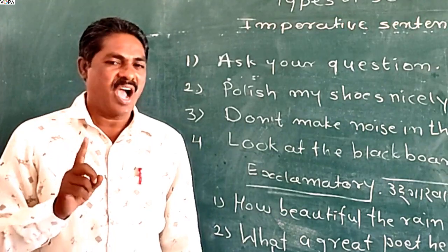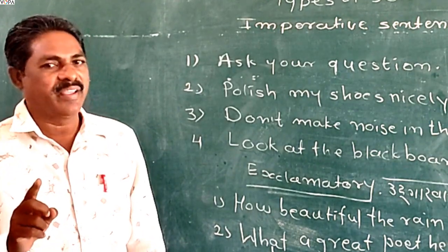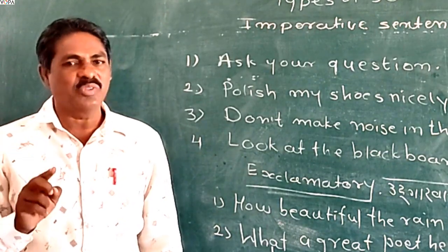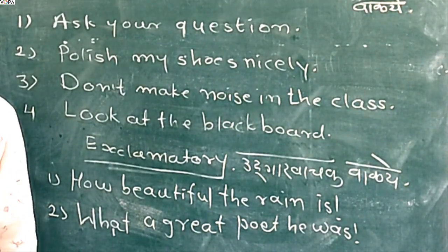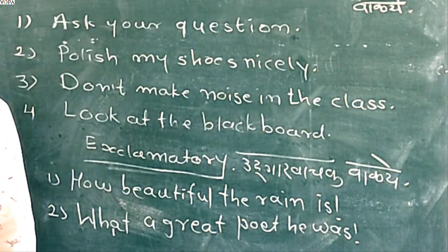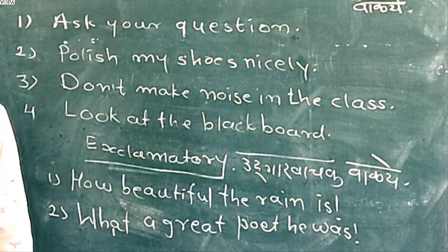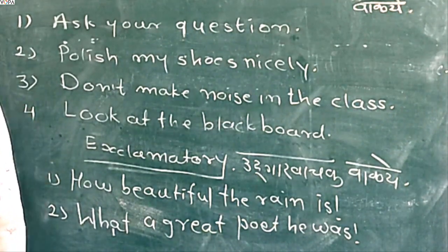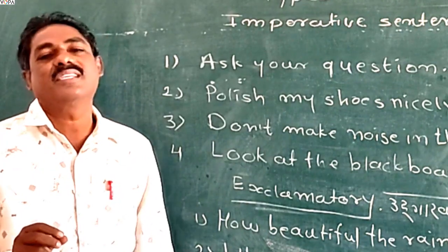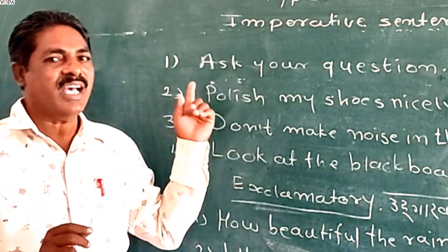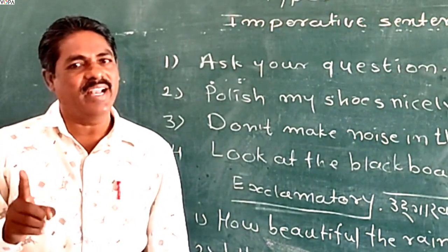Let us look at some examples: How beautiful the land is! What an ungrateful creature I am! What a great poet he was! Impossible! Hurray! We won the match. In this way, we have seen some examples of exclamatory sentences. After seeing these examples, we learn that the sentences begin with the word 'how' or 'what' and there is an exclamation mark at the end of the sentence.